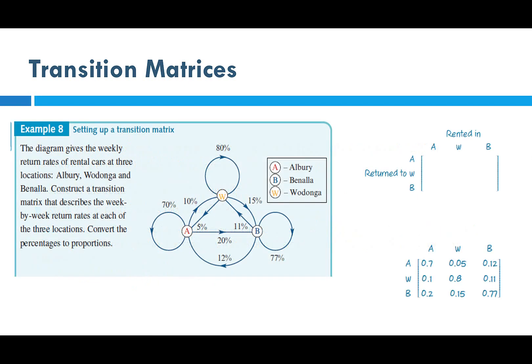Next example: the diagram gives the weekly return rates of rental cars at three locations — Albury, Wodonga, and Benalla. Construct a transition matrix that describes the week-by-week return rates at each of the three locations. Convert the percentages to proportions, putting them into decimals.